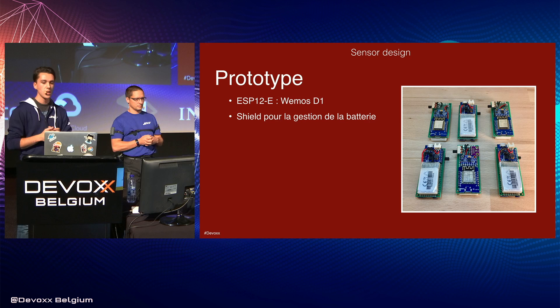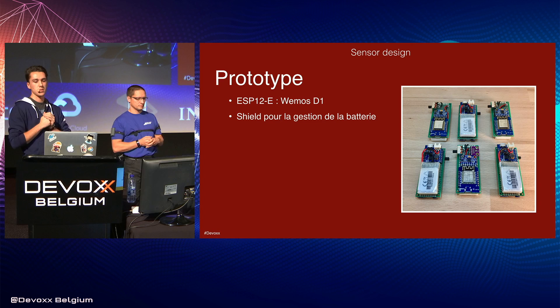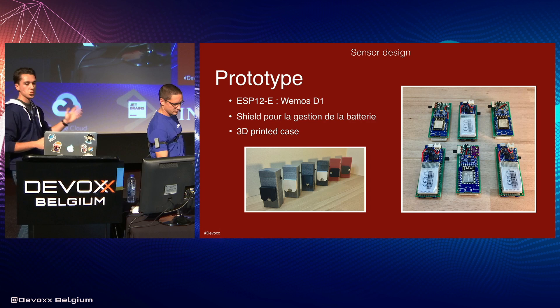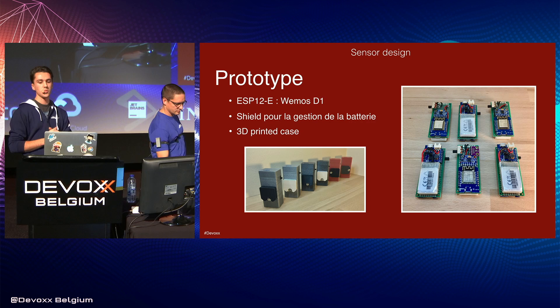We chose a LiPo battery with 600 milliamp-hours that allows approximately two and a half hours of measurement. Finally, to make the sensor wearable, we designed a 3D-printed case with different colors to distinguish the arm, back, and leg sensors.